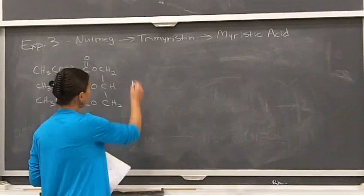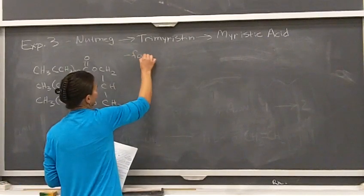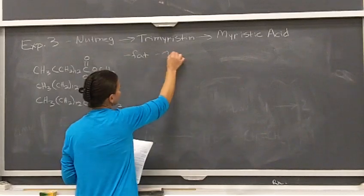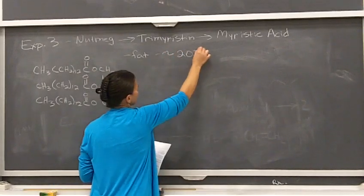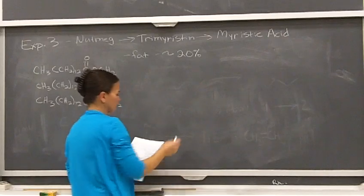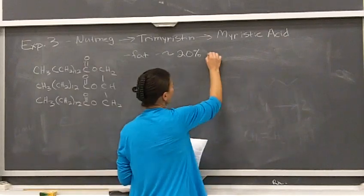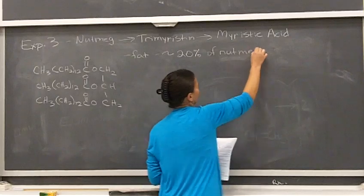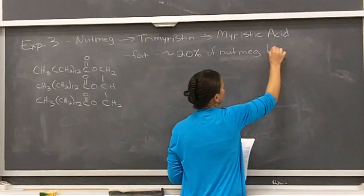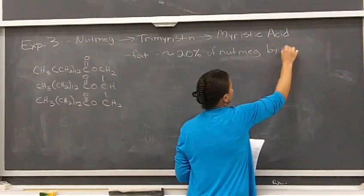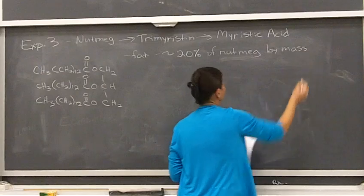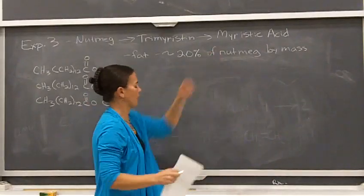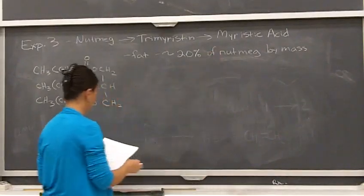So this is our fat. It's about 20% of nutmeg by mass — that's kind of a round number. So this is actually our fat, and then we'll go on to make our acid next week with it.